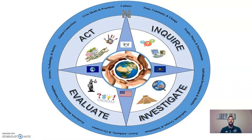If you look at some of these examples: things like culture, global connections, time, continuity and change — meaning how things change or how they stay the same — individual development, identity, individuals, groups and institutions. That could be governments, religious institutions, or economic institutions. Production, distribution and consumption — how we use and work with resources both created by man and provided by the environment. Nature, science, technology, society — things like the Industrial Revolution, which I'll get to in just a minute.